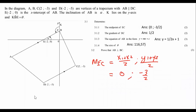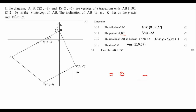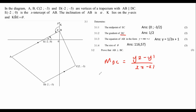Then we're going to find the gradient of DC. We use the gradient formula: y2 minus y1 over x2 minus x1. Fill in all your values and you should end up getting a half.